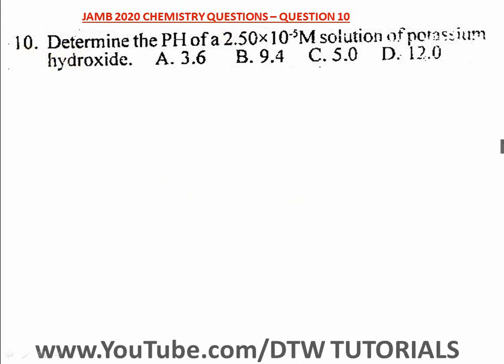Now we know that pH runs from 0 to 14. 0 to 6 is acid, 7 is neutral, while 8 to 14 is basic. And we know that potassium hydroxide is a base, so definitely the answer will fall between 8 to 14.